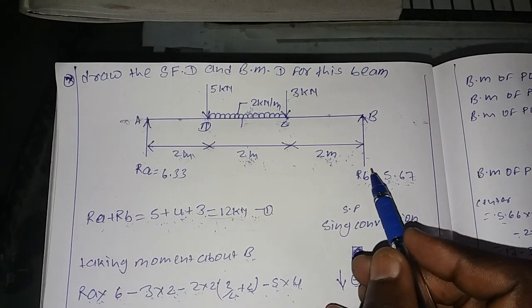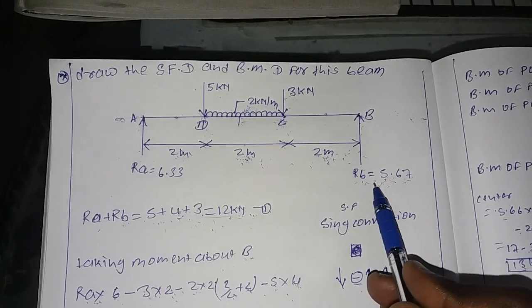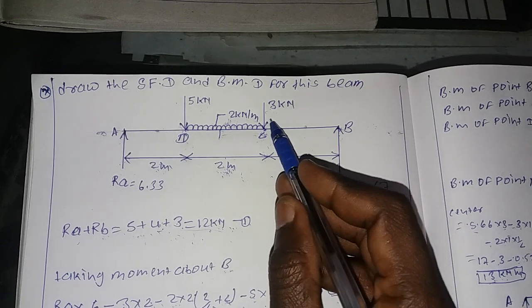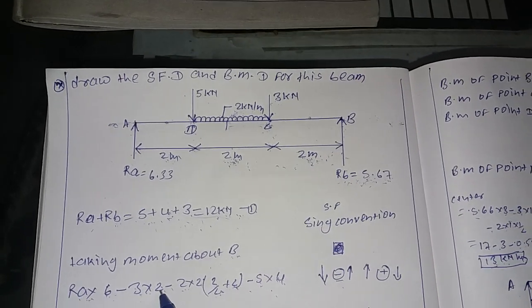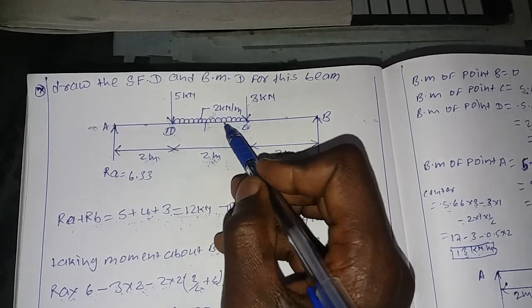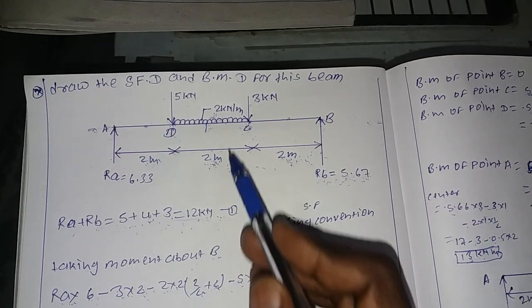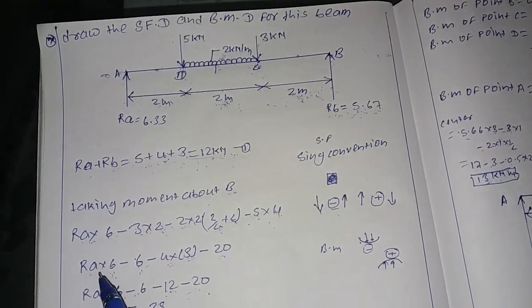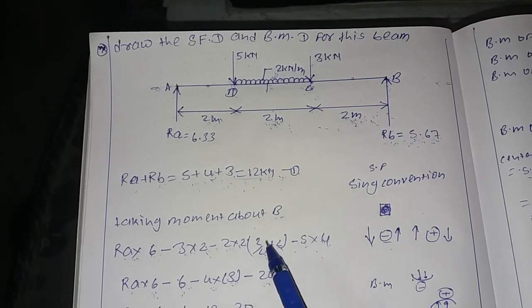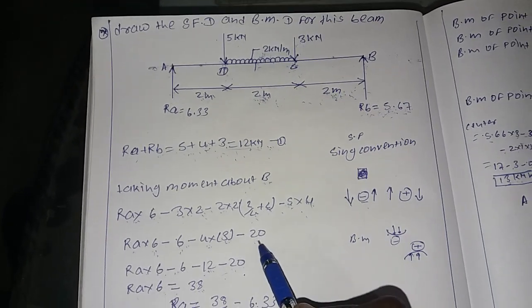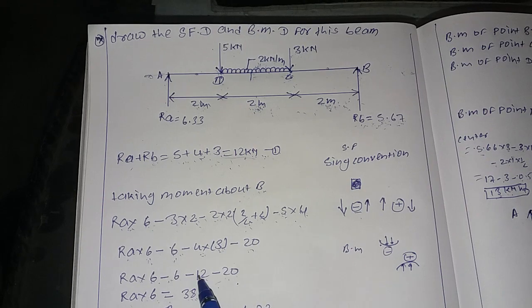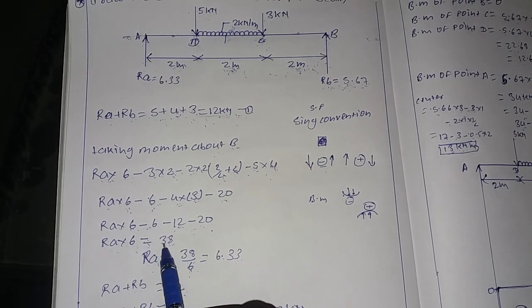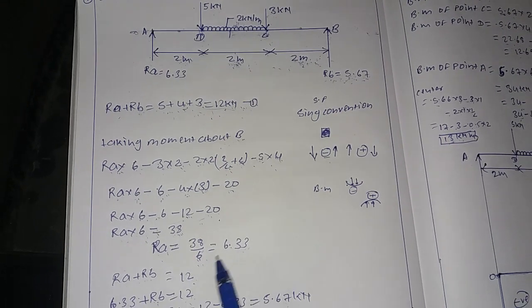The second step is taking moments about B. RA into 6 meters, minus point load 3 kN into 2, minus UDL load into distance into distance-by-half plus total distance, minus 5 into 4. Working out: 3 into 2 equals 6, 2 into 2 equals 4, divided by 2 gives 1 plus 2 equals 3, and 5 into 4 equals 20. The total sum gives RA into 6 equals 38, so RA equals 38 divided by 6 equals 6.33 kN.